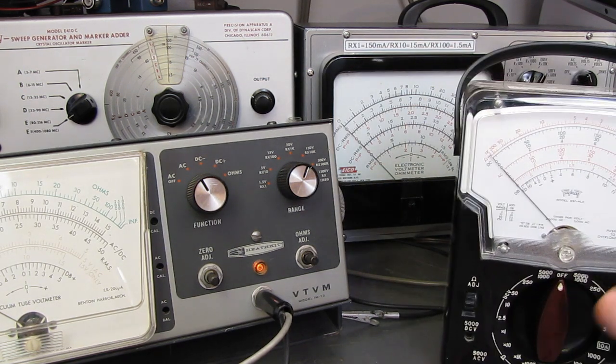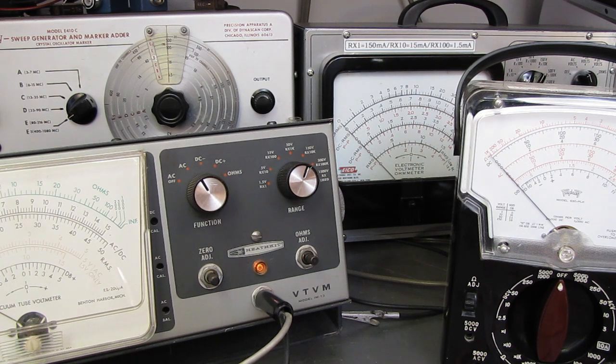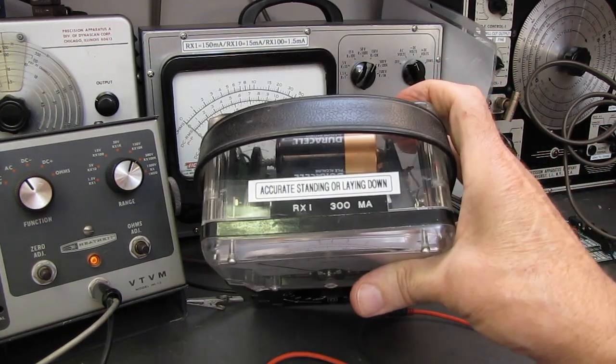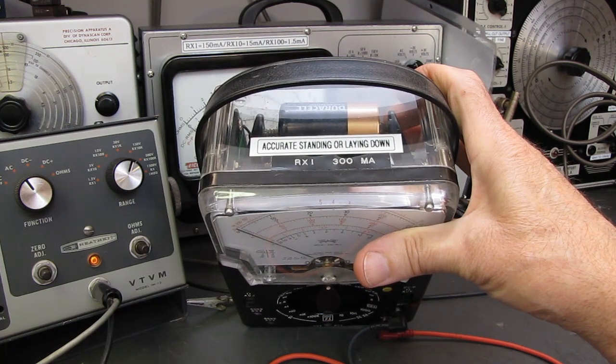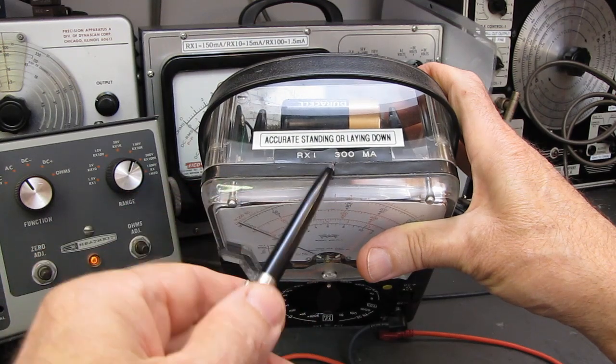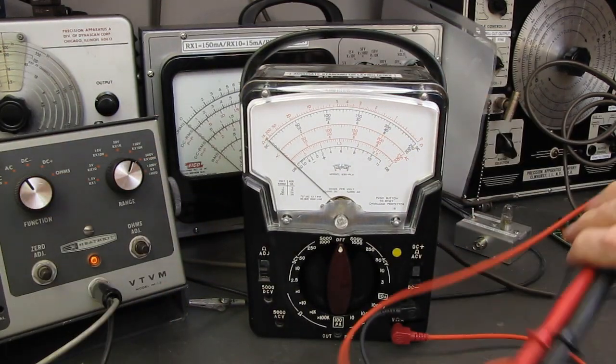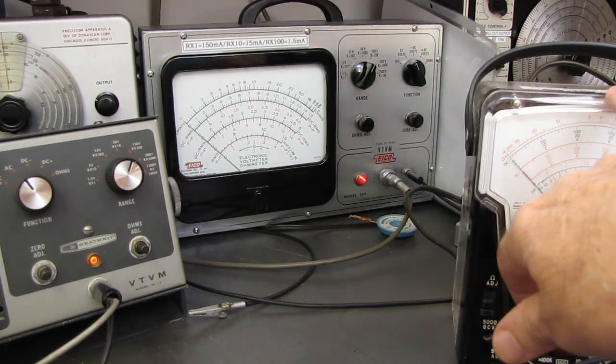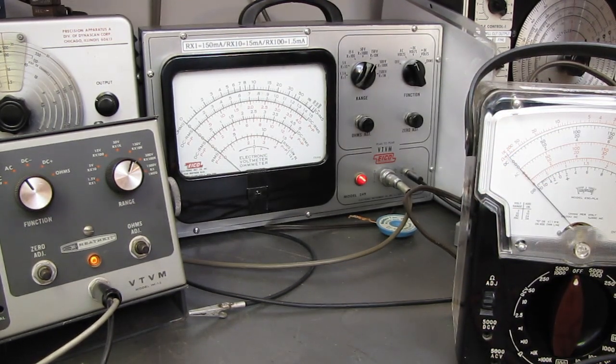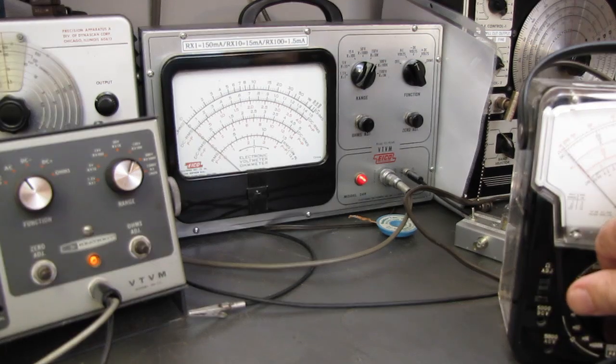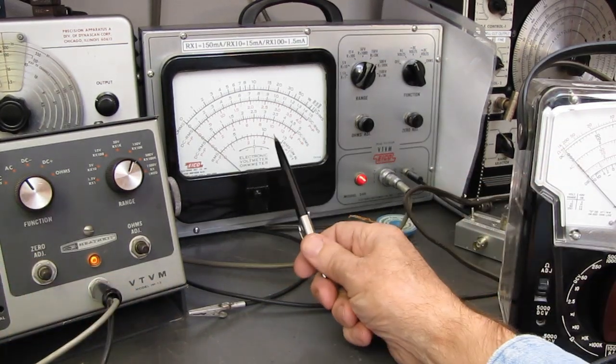If you were to put this on R times 1 setting and test those fuses, you'll have a whole box of bad fuses. They'll all test bad because you'll blow every one of them. Because on R times 1, this passes 300 milliamp years through the probes. It would be 30 milliamp years on R times 100 and 3 milliamp years on R times 1000. Or excuse me, R times 10 would be 30 milliamp years. R times 100 would be 3 milliamp years.